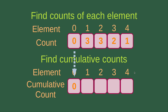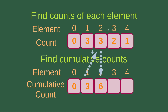From the number of counts of each element, I can find out the cumulative counts of the elements. The first element is 0, and the cumulative count is, of course, 0. Then for element number 1, the cumulative count is equal to the cumulative count of the previous element plus the number of elements for that particular number. So I will have 0 plus 3 to become 3, which is the cumulative count for element number 1. Then for element number 2, the cumulative count is equal to the cumulative count of the previous element plus the count for this particular element, which is 3, so I will have 6.